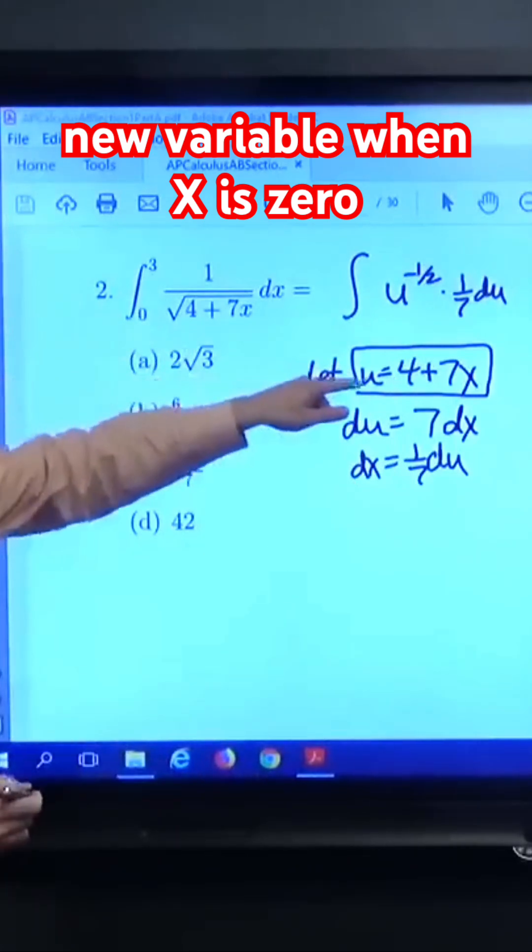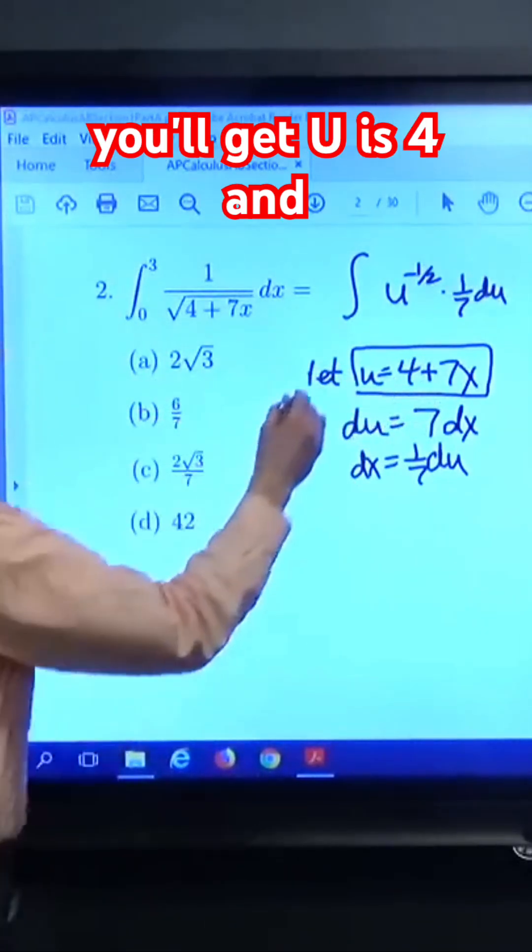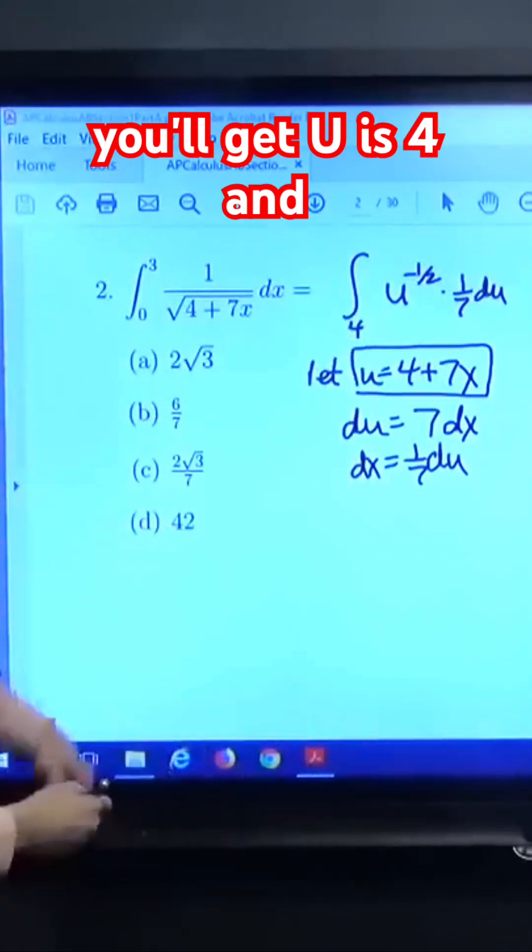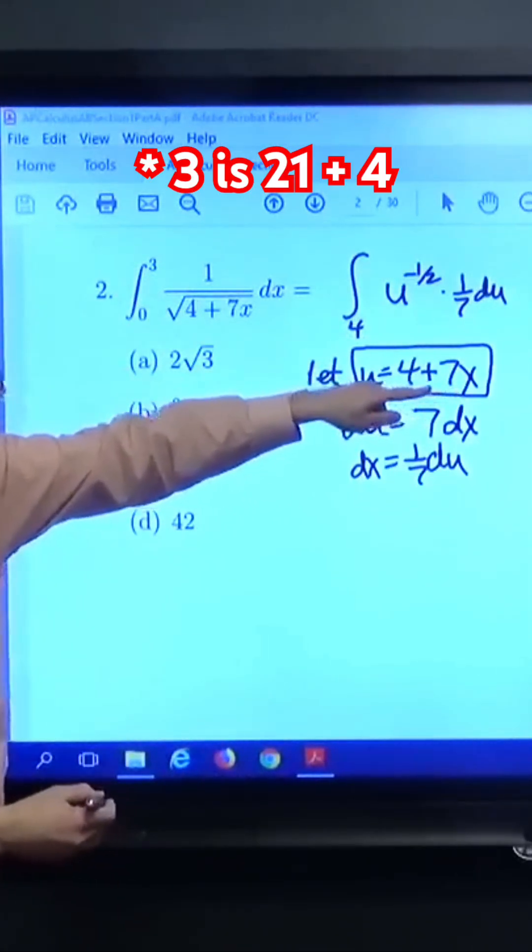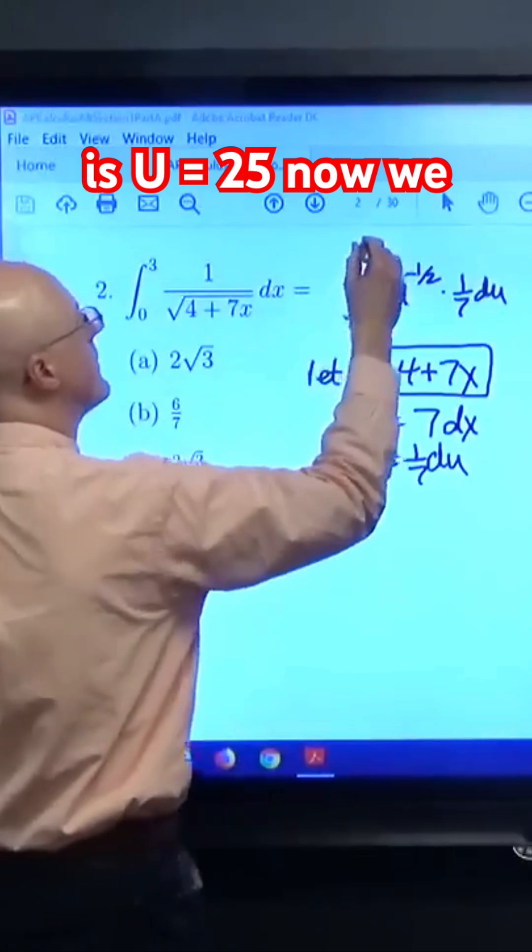When x is 0, plug in x equals 0 there, you'll get u is 4. And when x is 3, plug in x equals 3 here, you'll get 7 times 3 is 21, plus 4 is u equals 25.